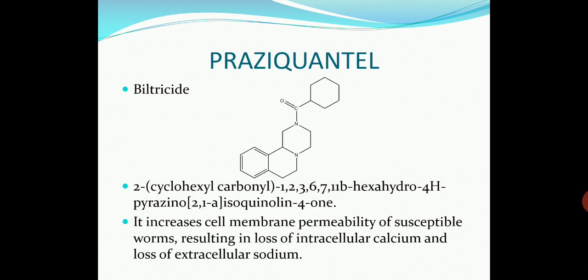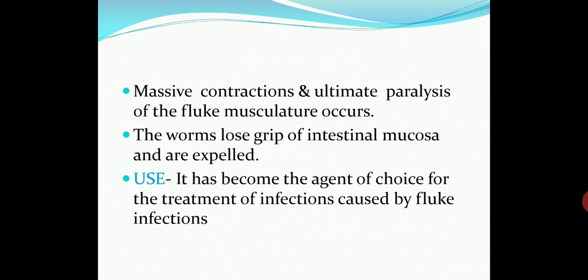The next drug is praziquantel — also known as biltricide; its chemical name is 2-cyclohexylcarbonyl-1,2,3,6,7,11b-hexahydro-4H-pyrazino[2,1-a]isoquinolin-4-one. It increases cell membrane permeability of susceptible worms, resulting in loss of intracellular calcium, loss of extracellular sodium, and massive contractions and ultimate paralysis of the fluke musculature. The worms lose their grip on the intestinal mucosa and are expelled from the body via feces. It has become the agent of choice for treatment of fluke infections.